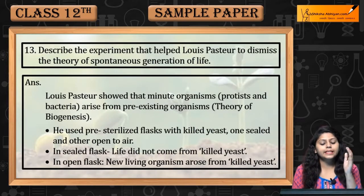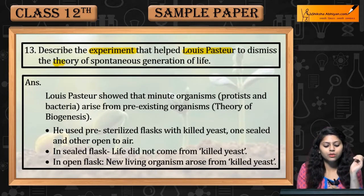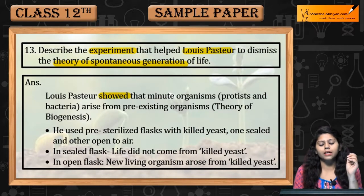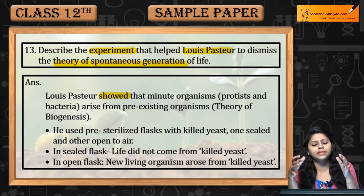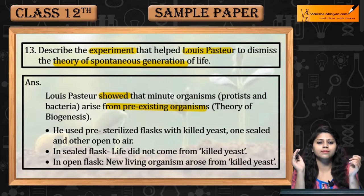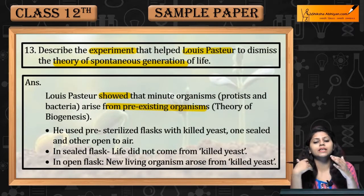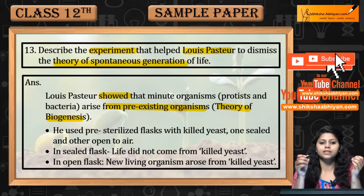Question 13: Describe the experiment that helped Louis Pasteur to dismiss the theory of spontaneous generation of life. Louis Pasteur ने show किया that जो microorganisms होते हैं like protests and bacteria, they arise from pre-existing organisms. यह जो pre-existing organisms से arise करते हैं new minute organisms — it is the theory of biogenesis.